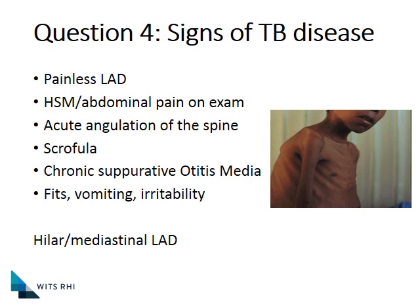Once you have the history of symptoms, examine the child. Look particularly for lymph nodes — you might pick up painless lymphadenopathy or abdominal tenderness. More severe signs include angulation of the spine or scrofuloderma, which is TB of the skin. Watch for chronic suppurative otitis media not responding to treatment — take a swab and send for AFBs. A child with neurological symptoms such as fits, vomiting, or irritability coupled with other TB symptoms would be very concerning for TB meningitis. The most common presentation of TB in young children is hilar or mediastinal TB with lymphadenopathy, which you will only be able to diagnose with an X-ray.